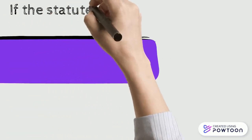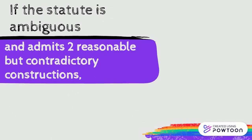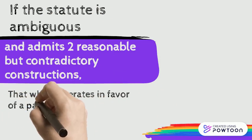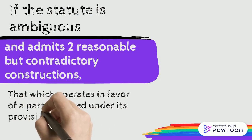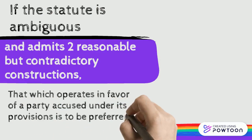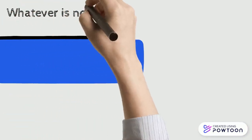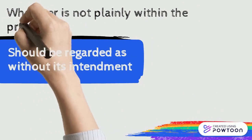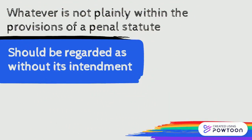If the statute is ambiguous and admits two reasonable but contradictory constructions, that which operates in favor of the party accused under its provisions is to be preferred. Whatever is not plainly within the provisions of a penal statute should be regarded as without its intent.